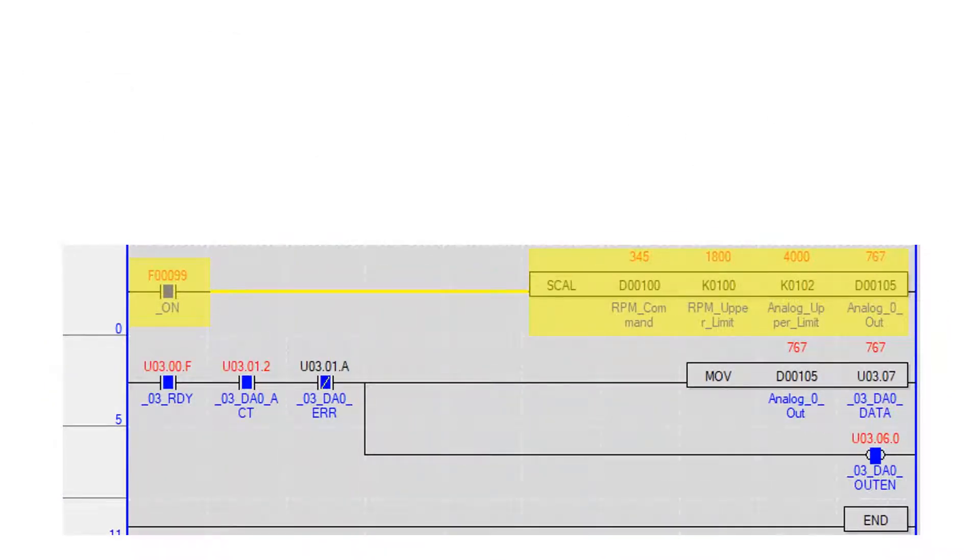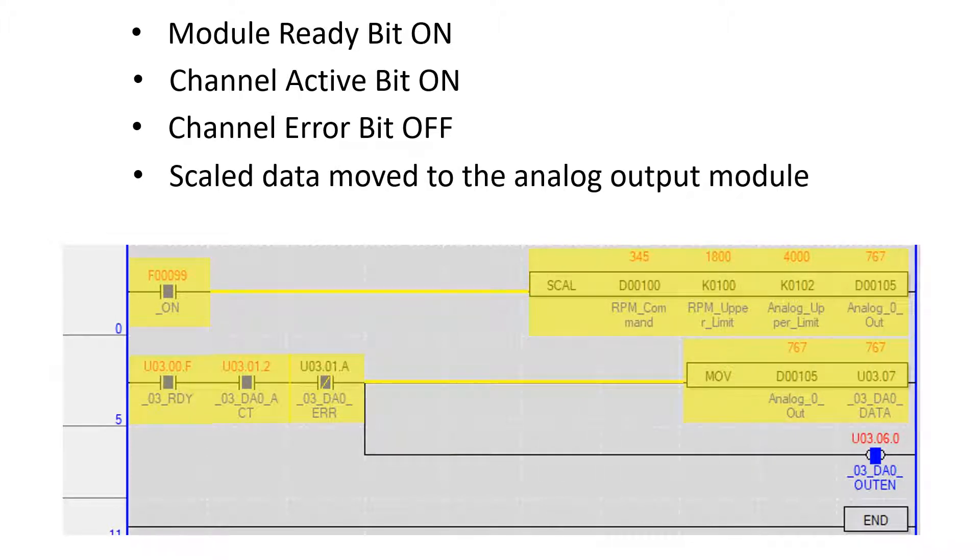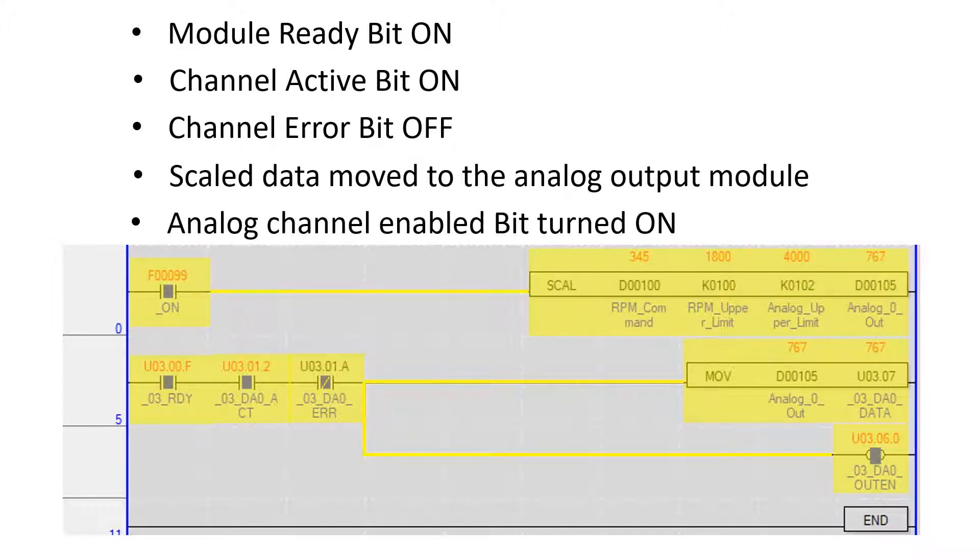To output the analog voltage, three permissive bits are used. The module ready bit and analog output channel 0 active bit must be on. The analog output channel 0 error bit must be off. If the permissive conditions are true, the scale motor speed value is moved to the analog output channel to output voltage to the VFD. The output channel enable bit must be turned on in order to output analog voltage.